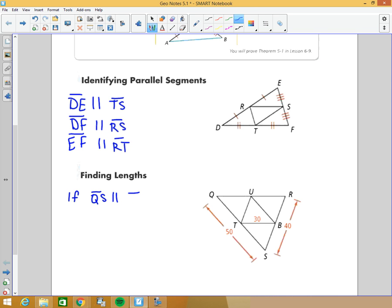and QS equals 50, then UB equals half of 50, which is 25. That's using the theorem. So this one is 25.